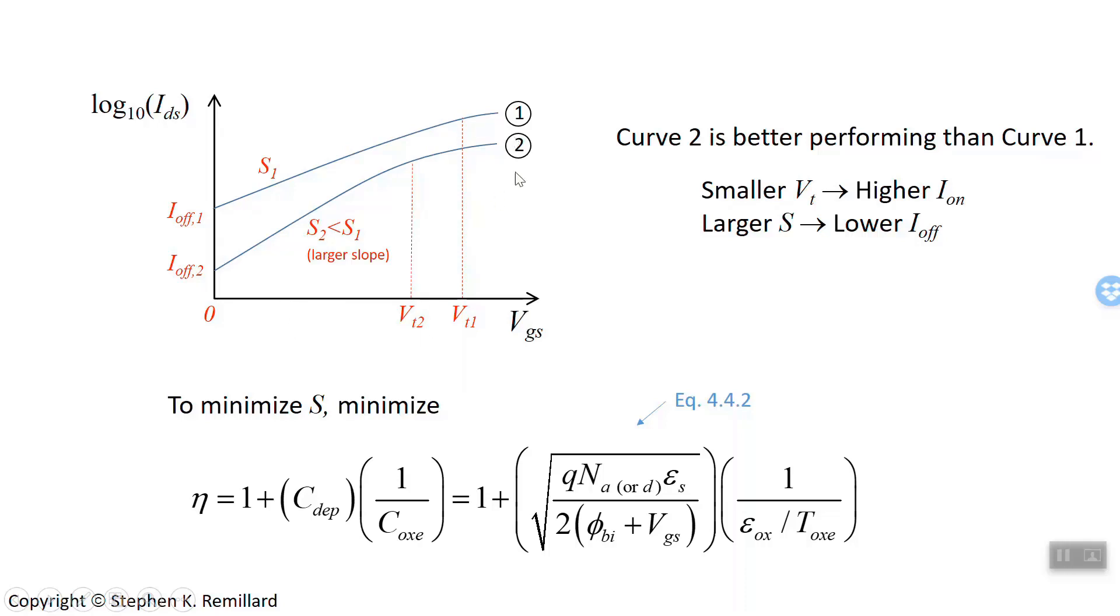I made a little made-up graph here of two different cases of the log of the drain current versus the gate voltage. Curve 1, curve 2. Where curve 2 is the better performing curve because it has both a smaller threshold voltage, which gives you a larger on current. And it has a smaller subthreshold swing, or rather a larger slope down here, which gives you a nice low off current. And so that's illustration anyway of choosing two different designs. The design number two is the better design. Okay, so we'll stop with that and then we will do an example next.